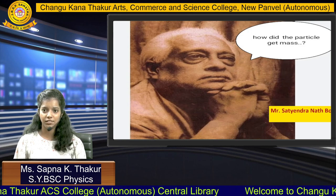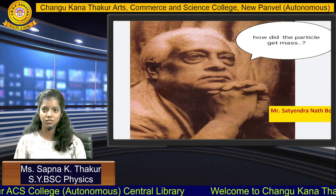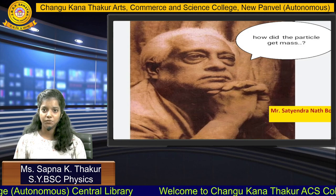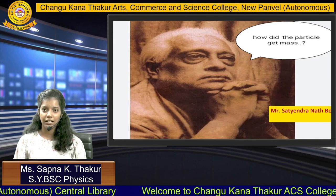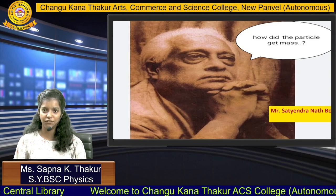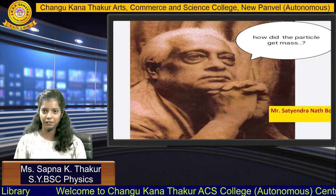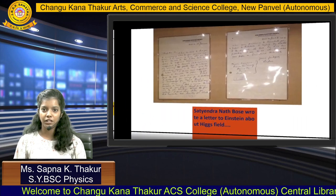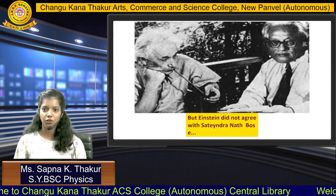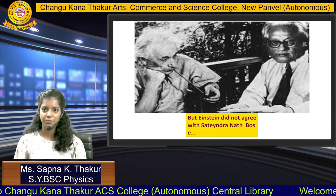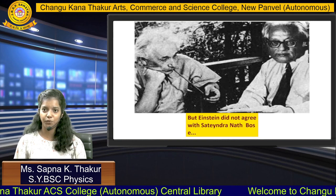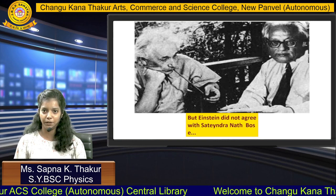our Indian physicist Satyendranath Bose concluded one mechanism. He said that there was one field which spread all over the universe and gives mass to particles. He wrote a letter about it to Einstein, but Einstein did not agree with him because he did not have any practical proof of the presence of the Higgs field.